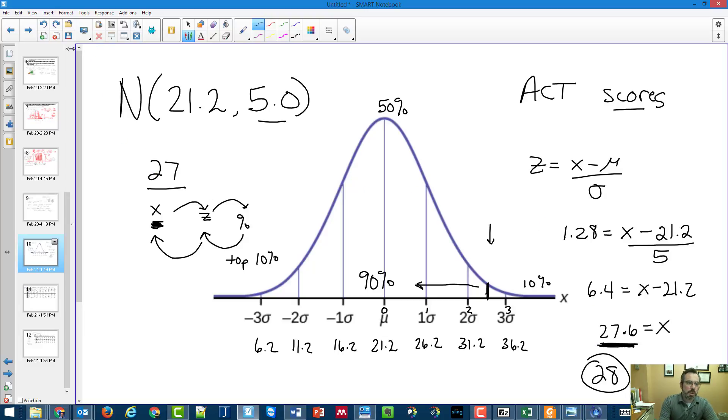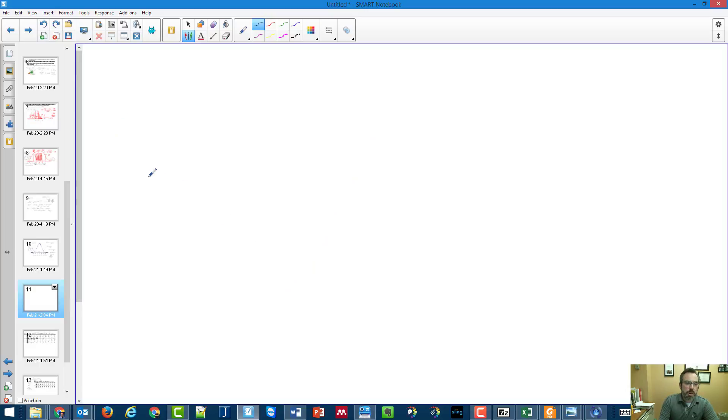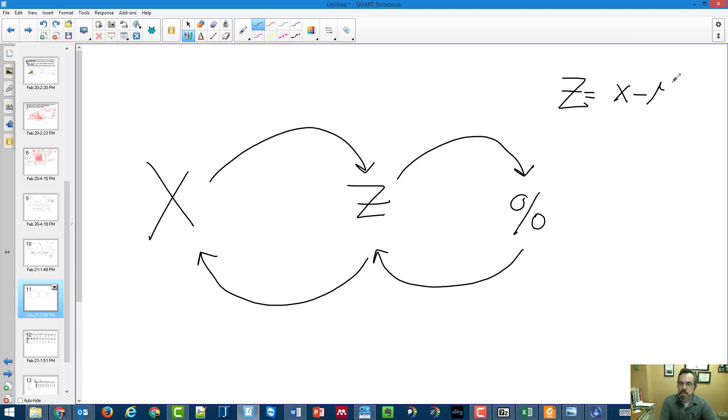So once again, regardless of what you're doing, you are going to either start at an x value, use the formula to get to a z-score, and then use the table in order to get to a percentage. Or you're going to start at a percentage, work backwards to get a z-score, and then work backwards to get that x. Always using this formula. And remember, that's sigma, standard deviation.